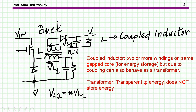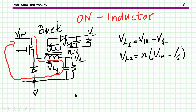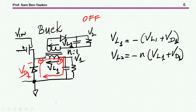If we have a turn ratio of n to 1, then at any given time the voltage of the secondary is related to the voltage of the primary as n to 1. When the switch is on, the voltage imposed on the inductor is Vin minus V1, and therefore the voltage at the secondary will be n times this value. During the off time, the transistor doesn't operate; we have the current locked in this loop through the diode — it could be a synchronous converter. The voltage in this case is the output voltage plus the diode voltage, so we have VL1 plus VD1, and therefore the output is the same value times n.